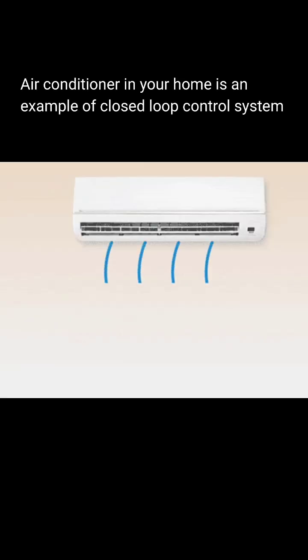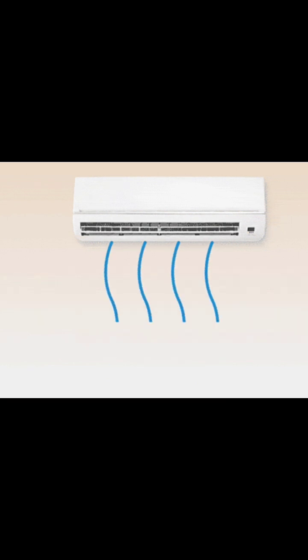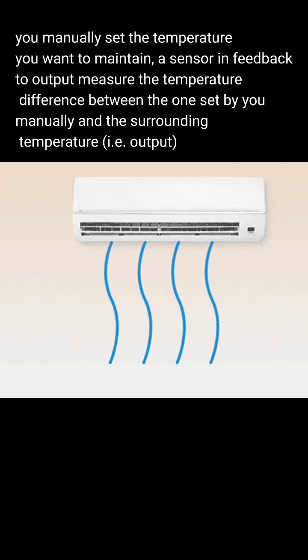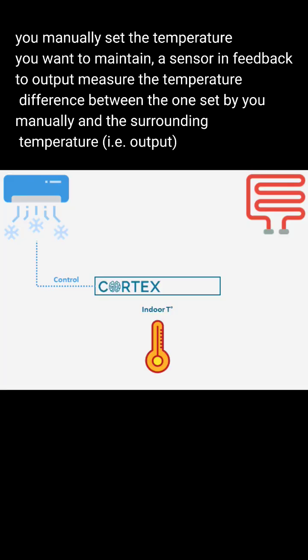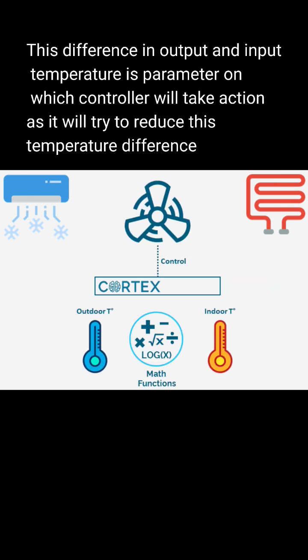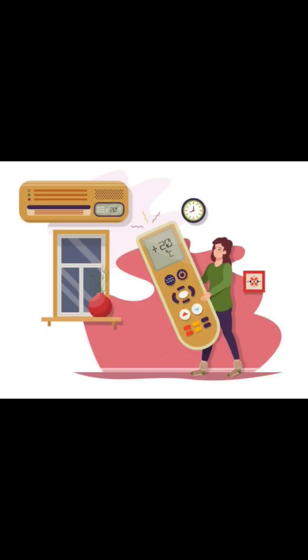An AC in your home is an example of a closed loop control system. You manually set the temperature you want to maintain, and a sensor in the feedback loop provides information about the output temperature—that is, the surrounding temperature. The controller then uses the temperature difference between the set point and the surroundings to apply control strategies that maintain your desired temperature.